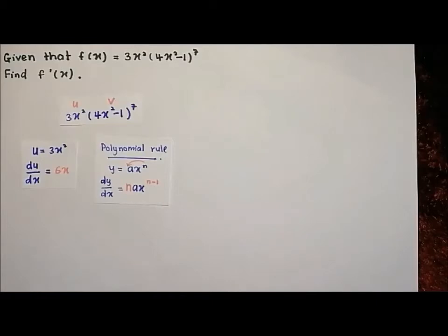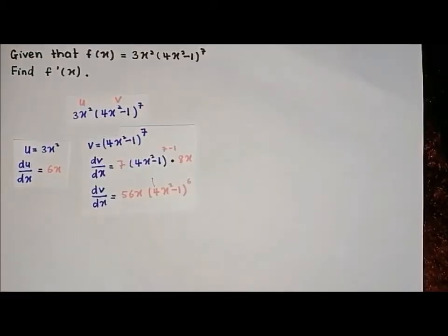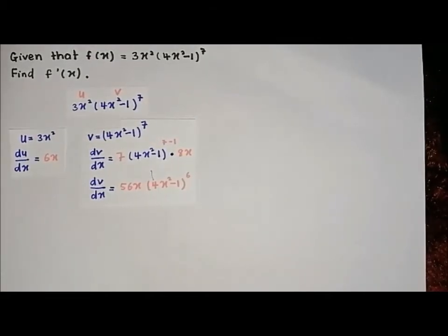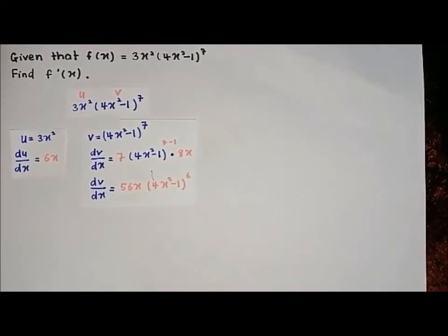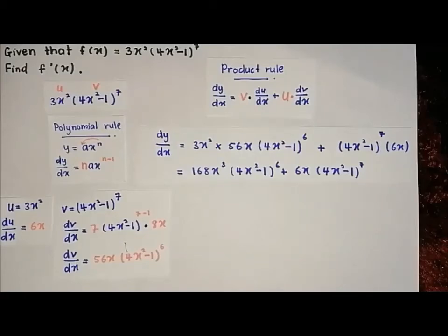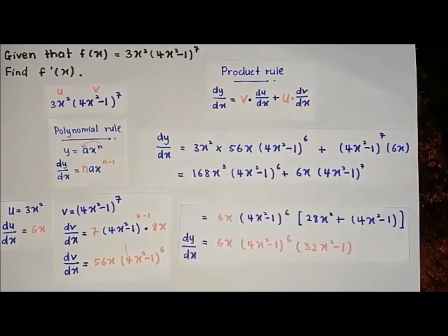Our answer for du over dx is 6x. Next, to differentiate v, we use the polynomial rule too, but we also multiply by 8x, which comes from differentiating the expression inside the bracket. Our final answer for dv over dx is 56x times (4x squared minus 1) to the power of 6. Now applying the product rule, dy over dx equals 168x cubed times (4x squared minus 1) to the power of 6, plus 6x times (4x squared minus 1) to the power of 7.